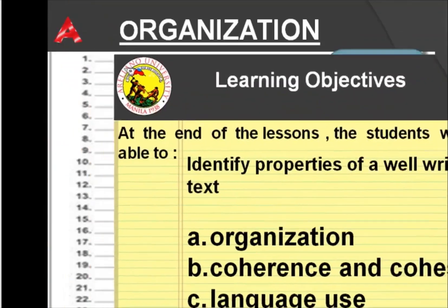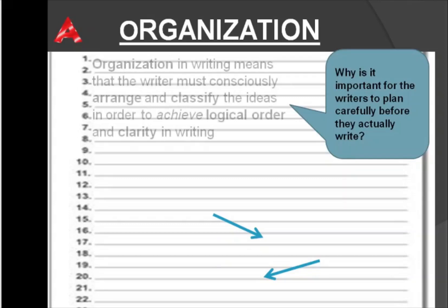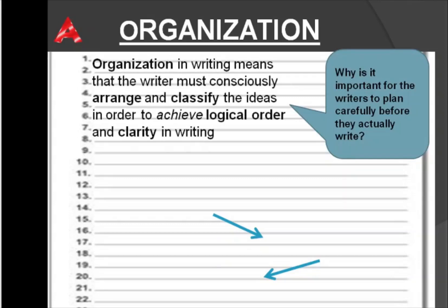Let's begin with organization. Why is it important for writers to plan carefully before they actually write? In organization, writing means that the writer must consciously arrange and classify the ideas in order to achieve logical order and clarity in writing. Organization entails that the ideas in writing must be interconnected with one another.